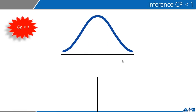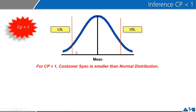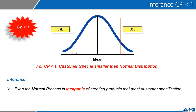The next situation is when CP is less than one. If I have a normal distribution curve and my CP is less than one, it would typically mean that the USL and LSL are inside of the normal distribution — some parts are already outside the specification. For CP less than one, the customer spec is smaller than the normal distribution curve. From that, I would infer that even the normal process is incapable of creating products that meet customer requirement. A little part, or maybe more, is already outside the acceptable area.